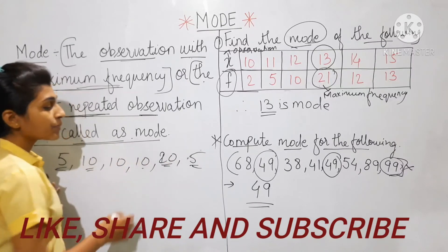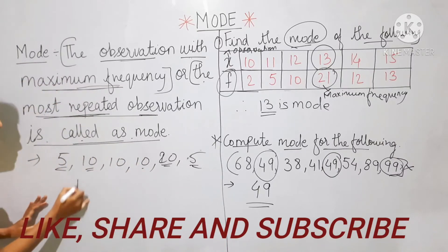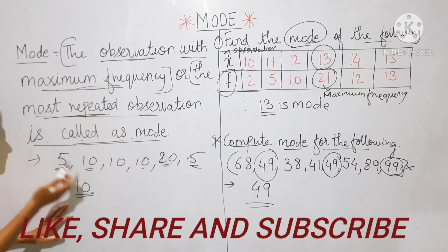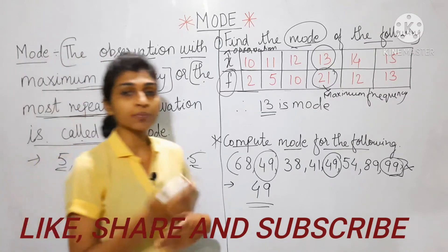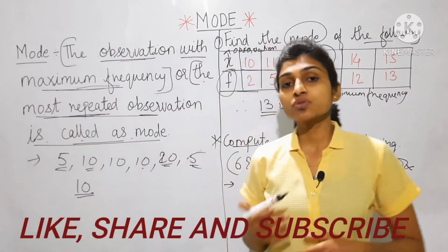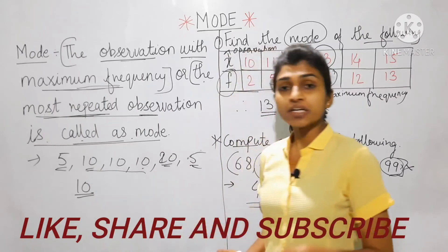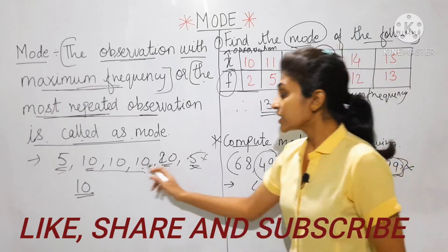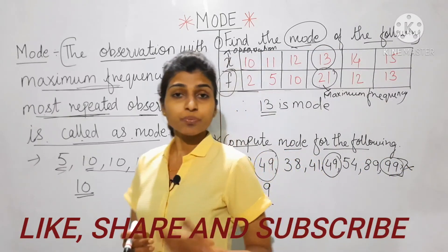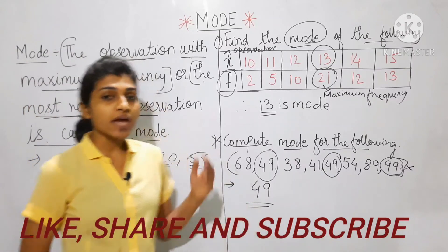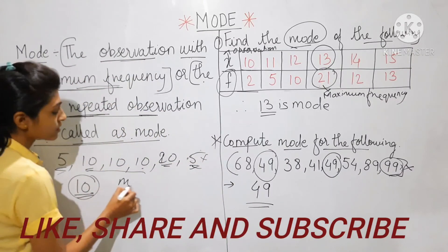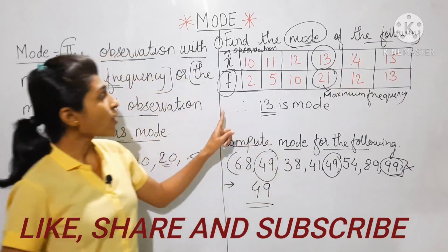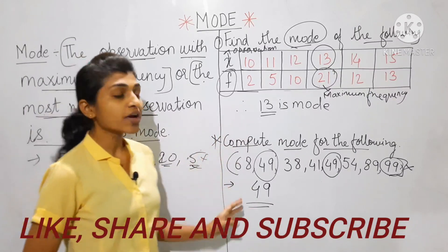In this example, 5 is repeating 2 times, 10 is repeating 3 times, and 20 appears once. So which will be the mode? Obviously 10 will be the mode — the most repeated observation. 10 is repeating three times; though 5 is repeating two times, 5 cannot be the mode. The observation repeating the most number of times is called mode. I hope you have understood how to calculate mode for discrete series and for individual observations.